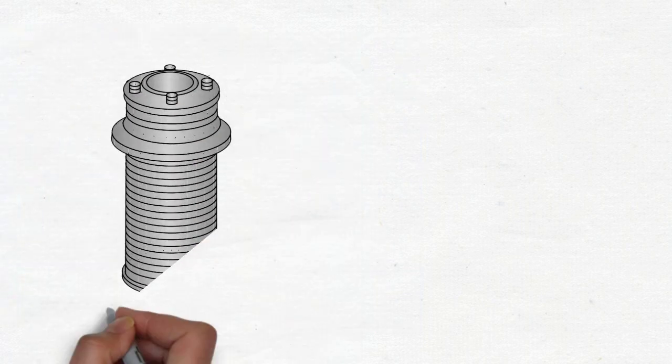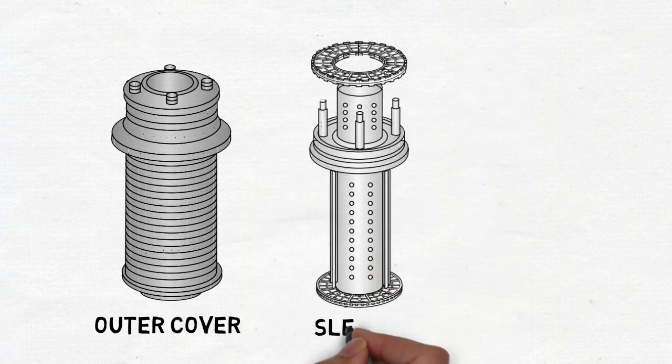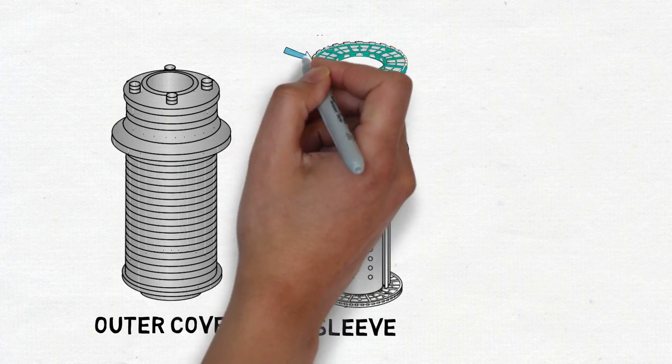Now let's see the internal components of the filter. In the housing there is an outer cover. The outer cover consists of a sleeve which carries both types of filtering element.